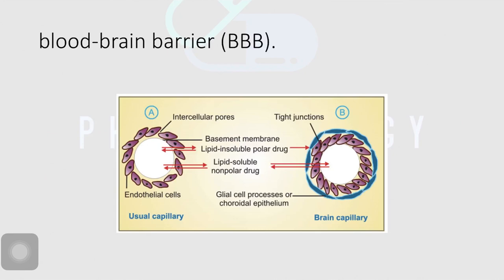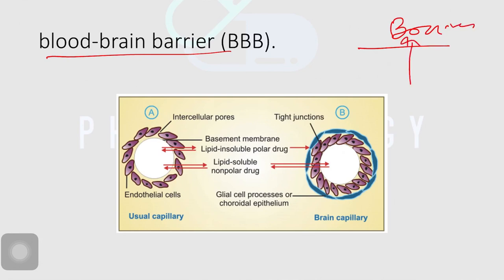That takes us to another section of this distribution topic — barriers. Two important barriers we need to understand. First is the blood-brain barrier, which we have also seen in NET. The blood-brain barrier is present in the brain, and its role is to prevent exposure of certain chemicals — including drugs and toxins — to the brain. Brain is an important part of the body, so there is a barrier system that prevents the entry of certain chemicals into the brain.